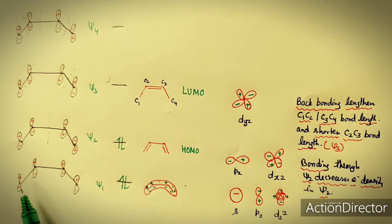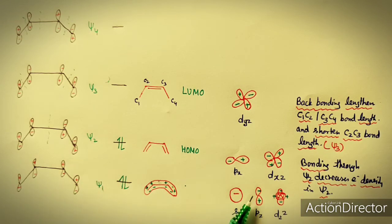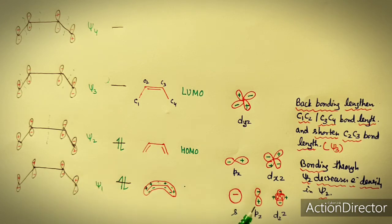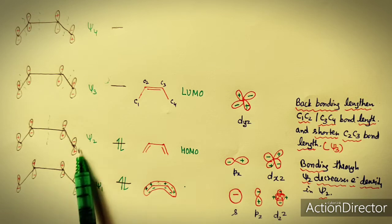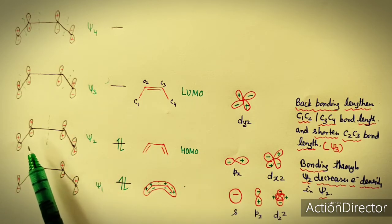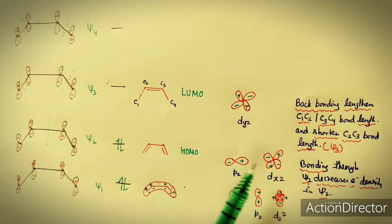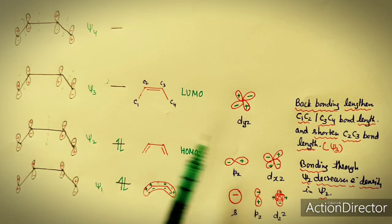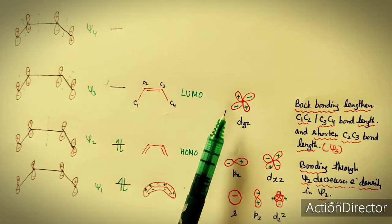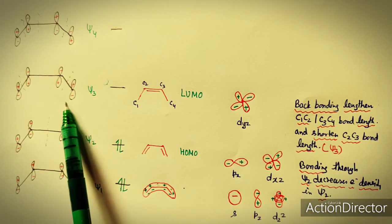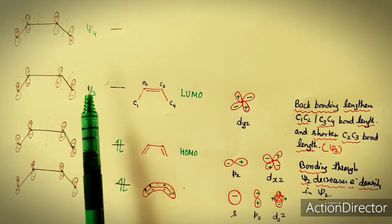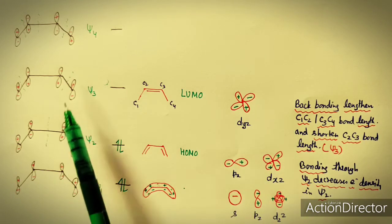The Pz orbital can also overlap with psi 1 due to matching symmetry. For psi 2, where one lobe is minus and the other plus, the Px and Dxz orbitals of the metal have matching symmetry and overlap with psi 2. The Dyz orbital overlaps with psi 3, the LUMO of the ligand. These are the metal orbitals that can overlap with the butadiene molecular orbitals.